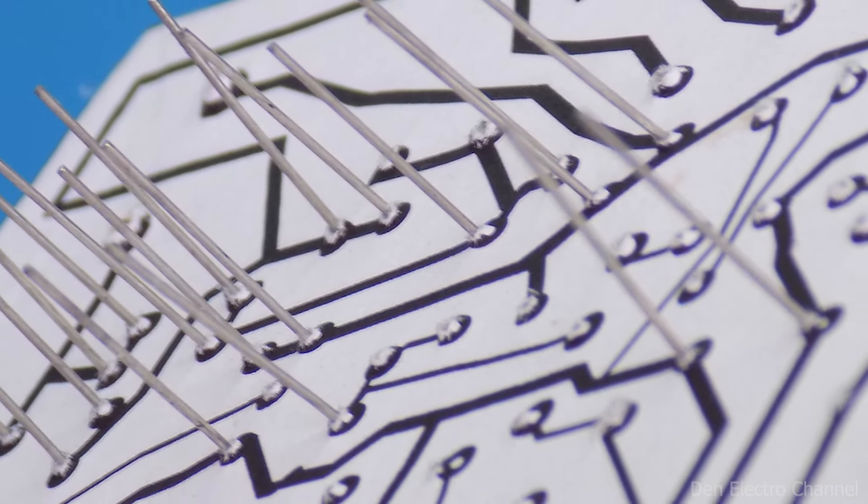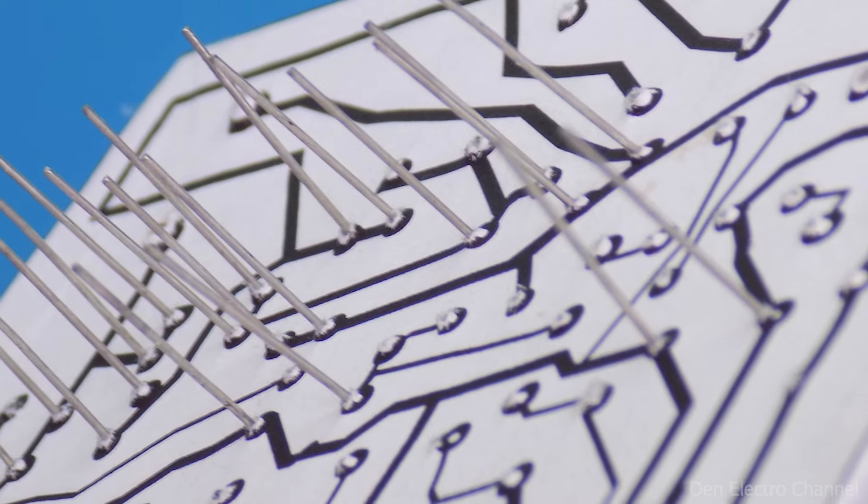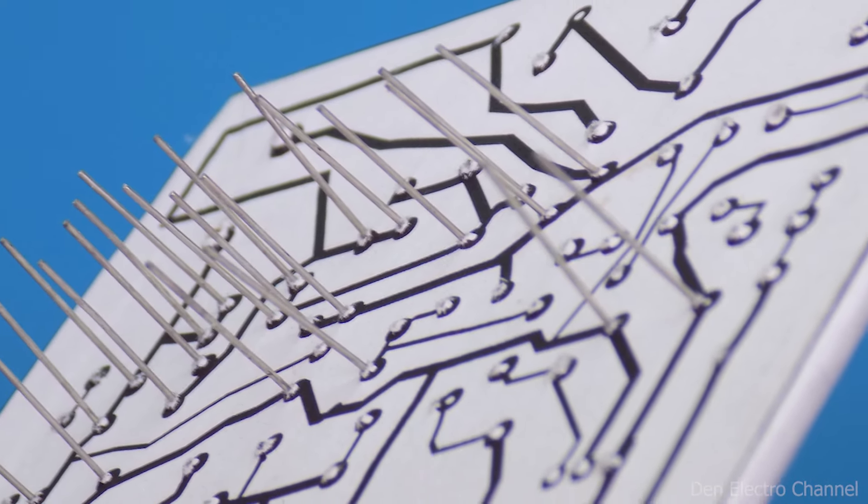Then you need to make holes in the board with a thick needle. Then you can insert all the components, bend the legs and solder them together.